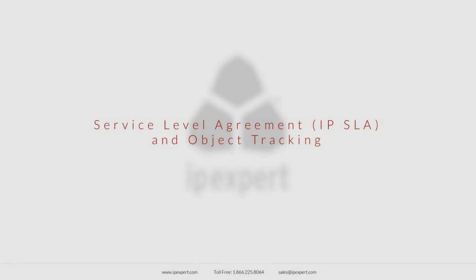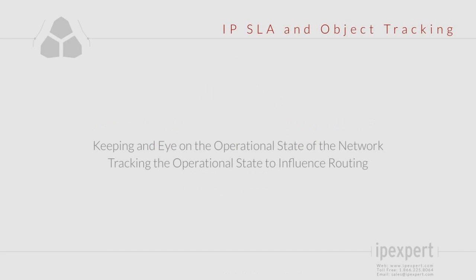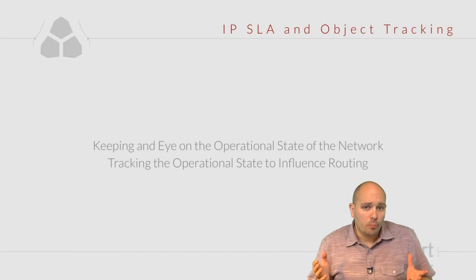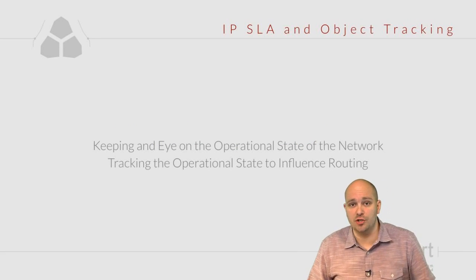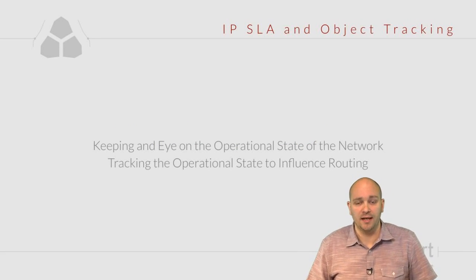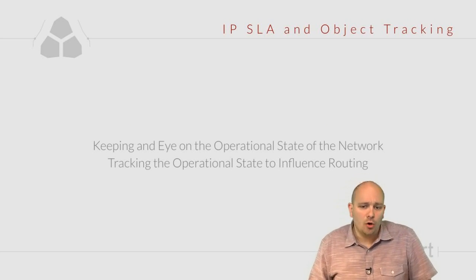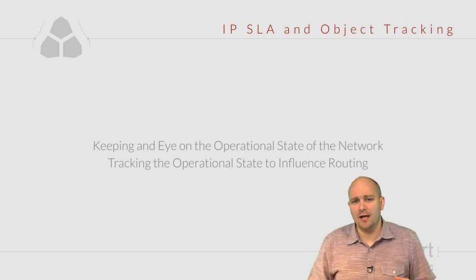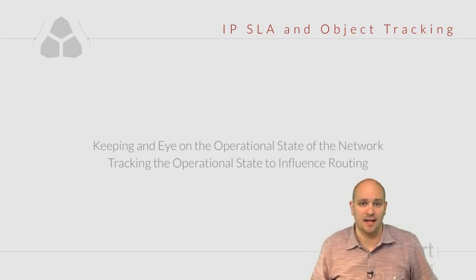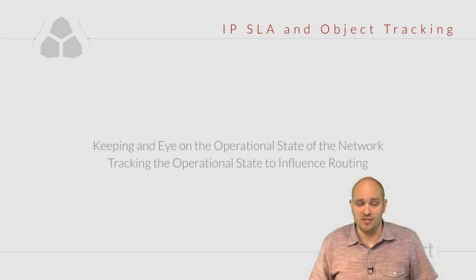In this module we are going to talk about an IOS feature called Service Level Agreements, or IP SLA, and we are going to mention how it can be used in conjunction with the object tracking feature. We'll discuss how we can keep an eye on the operational state of the network, look beyond the mere presence of routes in the routing table, and use that information to influence routing decisions.